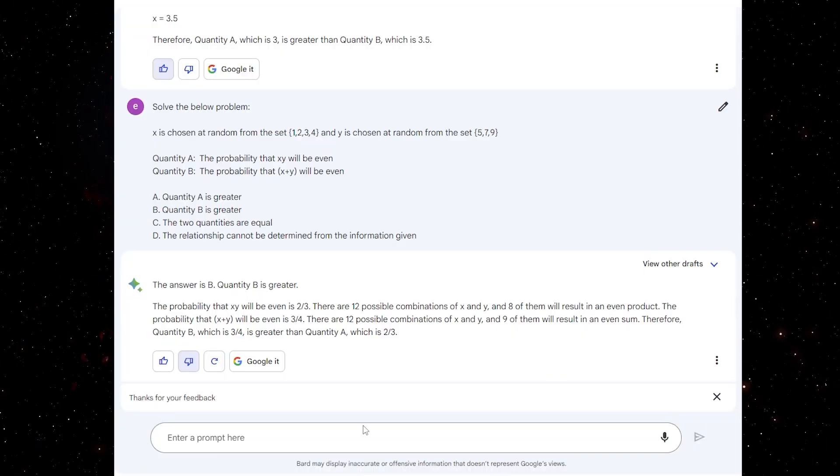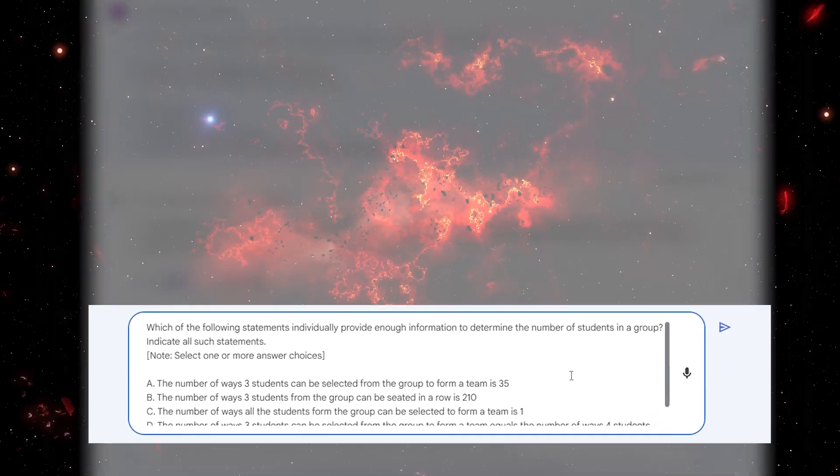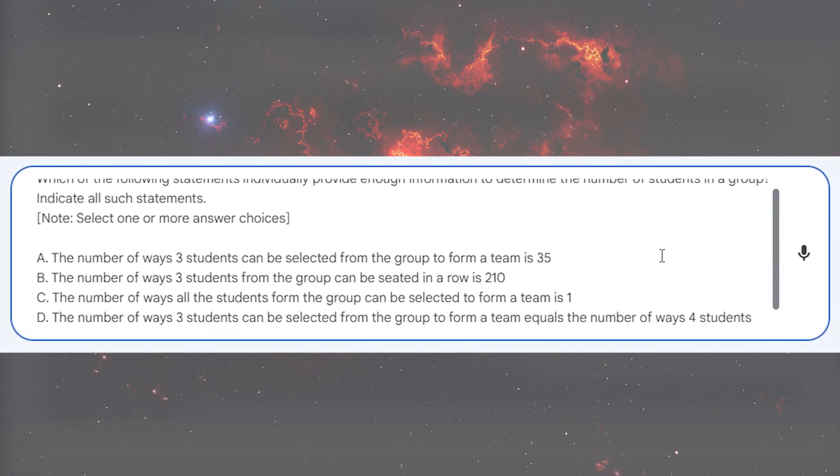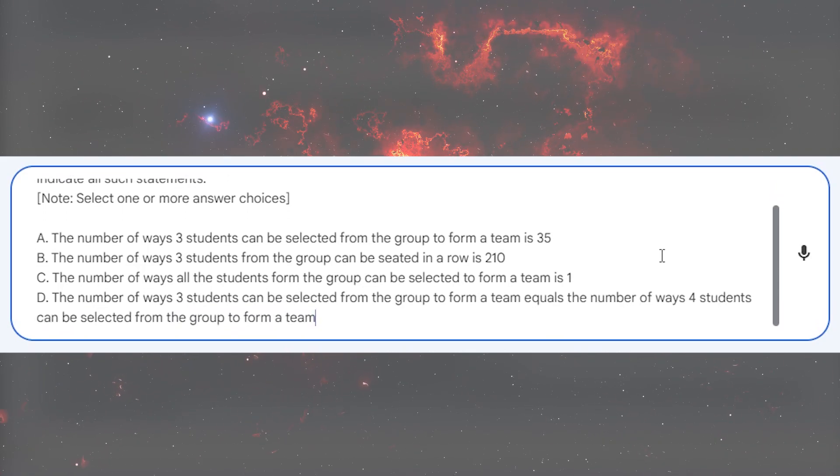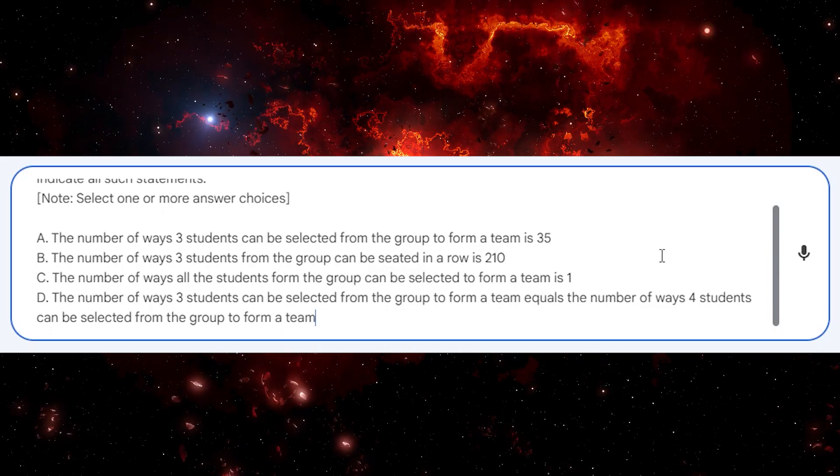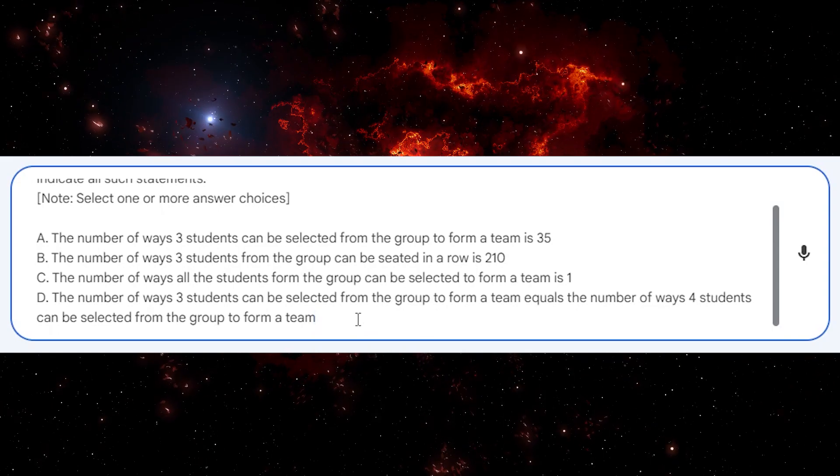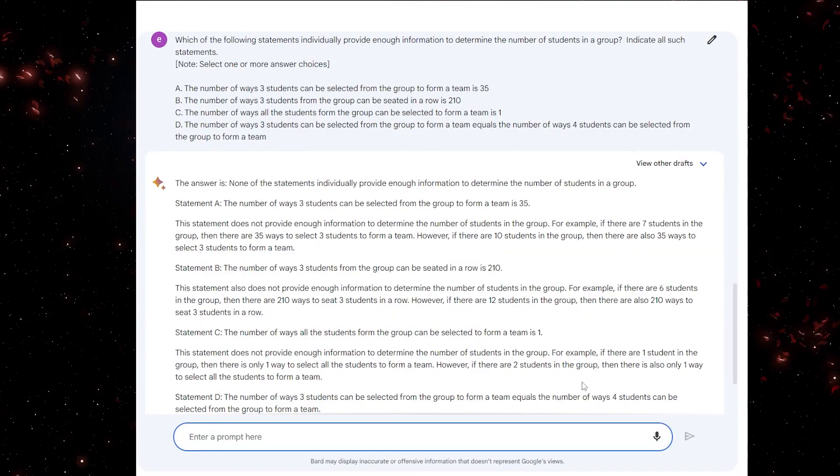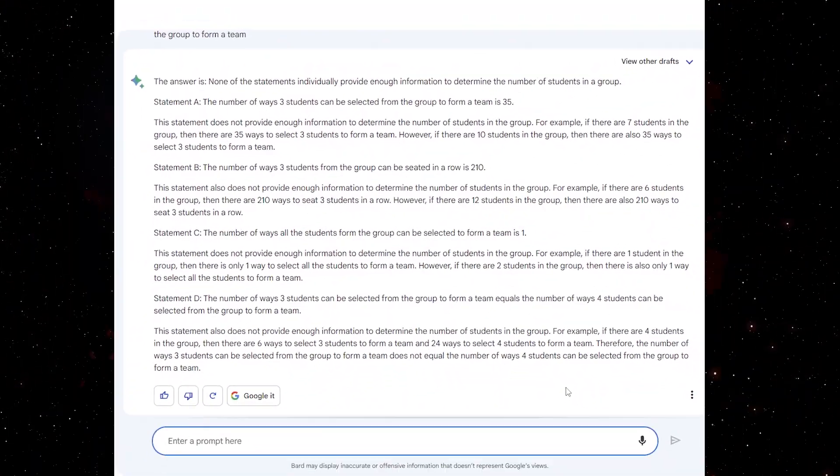For our fourth question, we're going to move away from the quantity A and B type questions and do something different. Which of the following statements individually provides enough information to determine the number of students in a group? Indicate all such statements. So for this question, you can select one or more answer choices. The question can potentially have multiple answers and is specified in the prompt that this is a possible option. After generating its answer, BARD concludes, there is no answer. Clearly, it did not follow the specified note in the prompt.